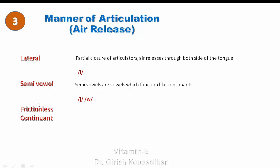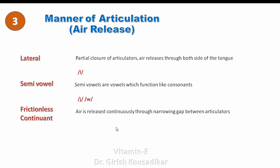Frictionless continuant — 'continuant' indicates a continuous flow of air. Air is released continuously through a narrowing gap between articulators to produce the sound /r/. Compare with /l/: in /l/ there is a partial closure and the articulators return to normal position, but in /r/ the air passes continuously — hence it is known as a frictionless continuant.